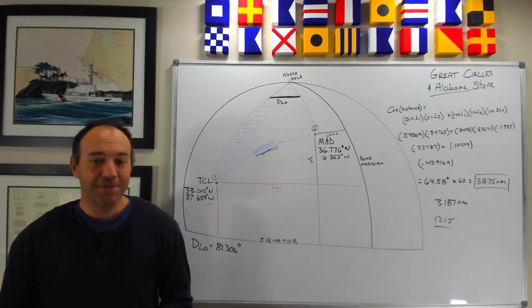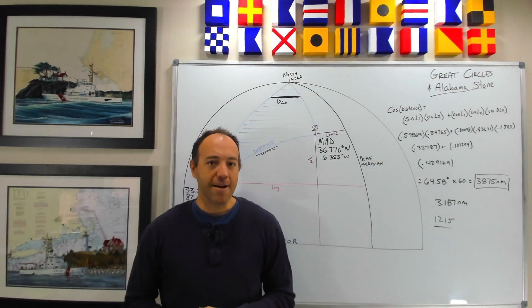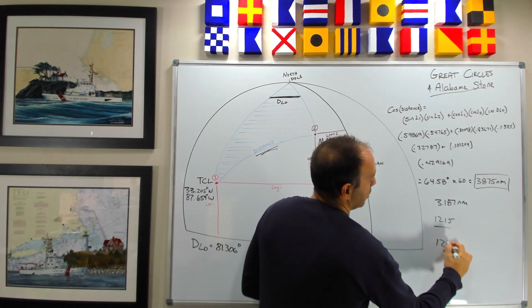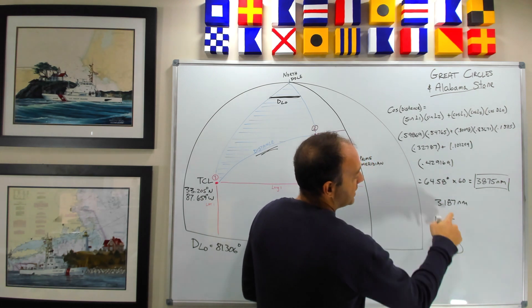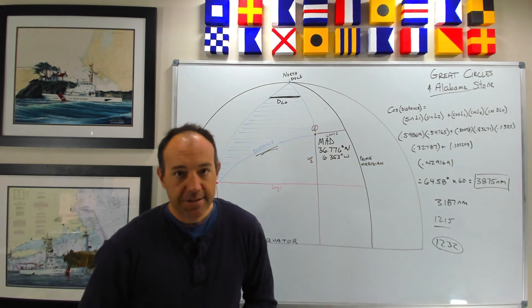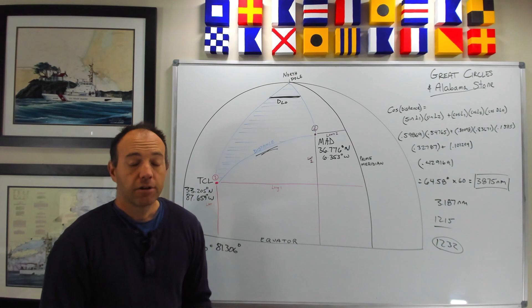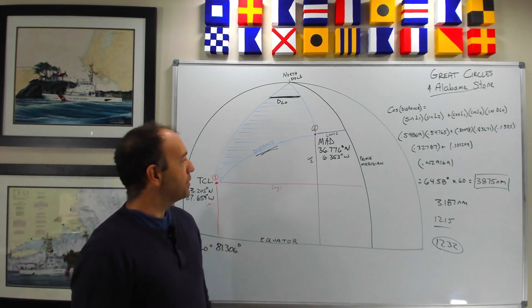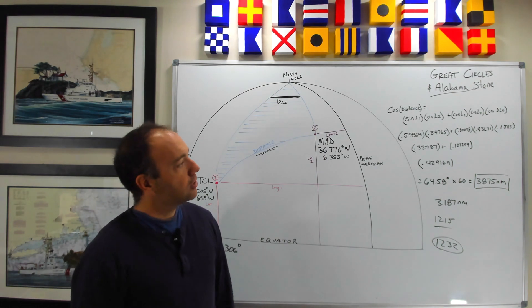So within the bounds of measuring at the time, maybe the hypothesis is that this number, which was on the Alabama Stone, 1232, represented the number of Spanish leagues back to Madrid or some hometown in Spain, if you give or take a little bit. So kind of a cool application of this Great Circle problem.